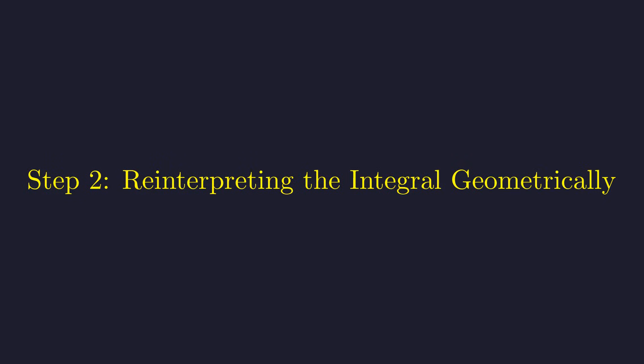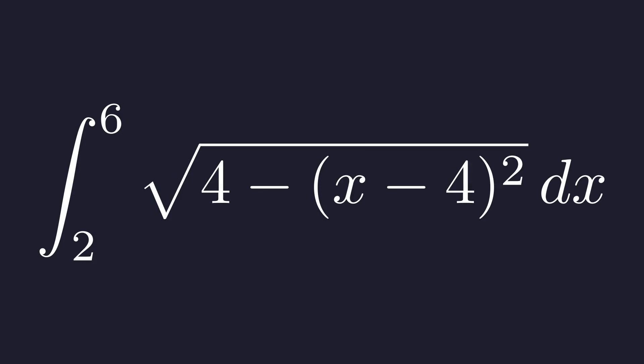Now we substitute this simplified expression back into our original integral. This will reveal a surprising geometric structure. Our integral is now the integral from 2 to 6 of the square root of 4 minus the quantity x minus 4 squared. This form is very suggestive.